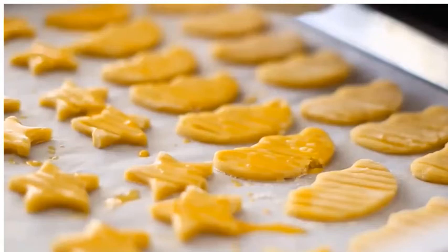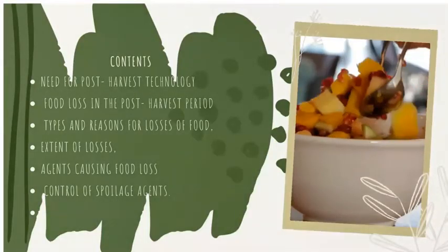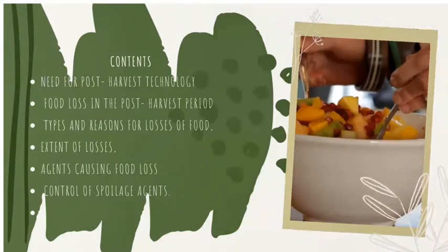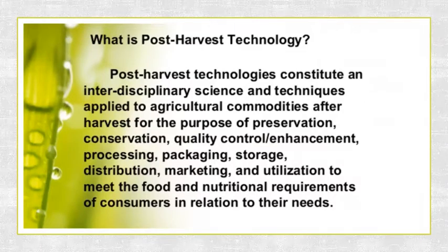Welcome to today's class. We will be discussing Unit 8: Post-Harvest Technology. In this chapter we will see the need for post-harvest technology, food loss in the post-harvest period, types and reasons for losses, extent of losses, agents causing food loss, and control of spoilage agents. Post-harvest technologies constitute an interdisciplinary science and techniques applied to agricultural commodities after harvest for the purpose of preservation, conservation, quality control or enhancement, processing, packaging, storage, distribution, marketing, and utilization to meet the food and nutritional requirements of consumers.